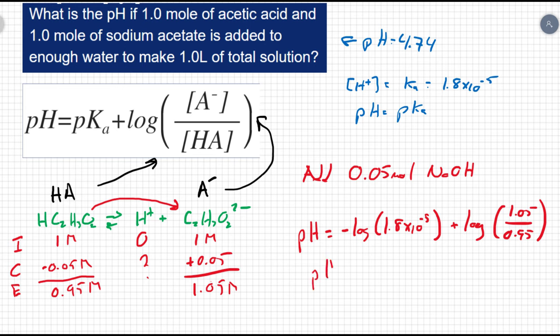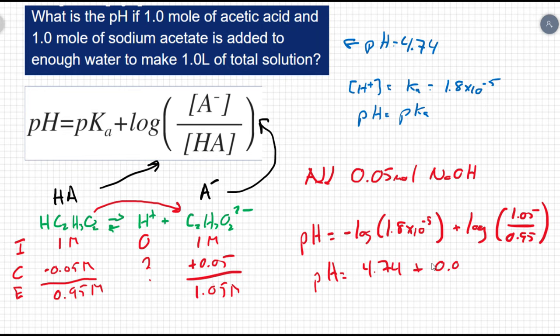So that means my pH is going to equal the negative log of 1.8 times 10 to the negative 5. We've already done that. That's 4.74. So that's going to be 4.74 plus 0.043. And when you add these together, you end up getting 4.78 as a pH.